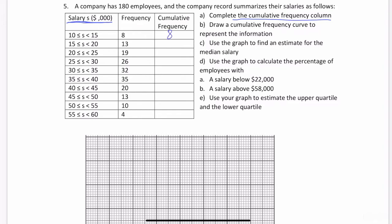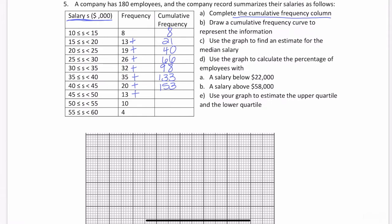The first number is going to be 8. Then you're going to add. So 8 plus 13 is 21, 21 plus 19 is 40, 40 plus 26 is 66, 66 plus 32 is 98, 98 plus 35 is 133, 133 plus 20 is 153, 153 plus 13 is 166, then plus 10 is 176, plus 4 is 180. Which is great because they told us there's a total of 180 employees, so our cumulative frequencies better add up to 180, and they have.